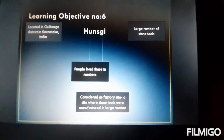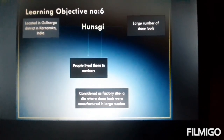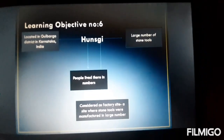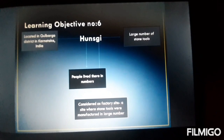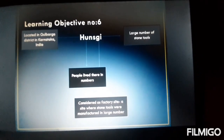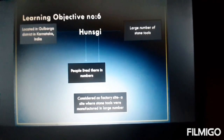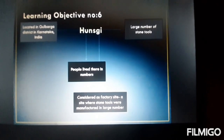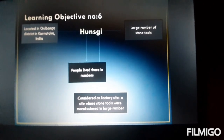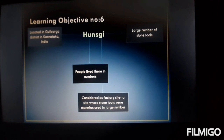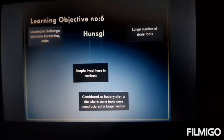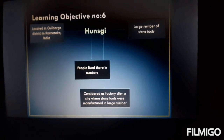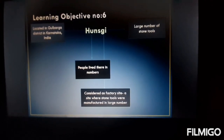Now we go to a place called Hunsgi — is it new for you? Hunsgi is a place located in Gulbarga, a district in Karnataka, India. Why Hunsgi specifically? Because archaeologists — a person who finds various evidence of stones, sculptures, and other things — found a large number of stone tools there. The large number of people's remains were also found in Hunsgi.